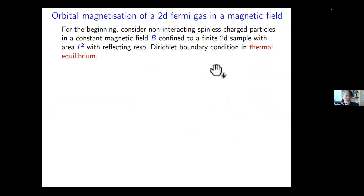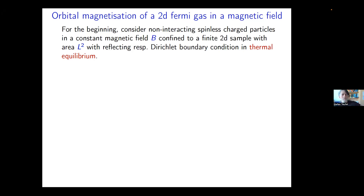We do not start by analyzing directly the transport coefficients, but another quantity: the orbital magnetization of the gas. Orbital magnetization means the magnetic moment per area created by the motion of the electrons — not by their spins — so the magnetic moments created by the motion of the charged particles. We want to understand the orbital magnetization of a two-dimensional Fermi gas in an external magnetic field.